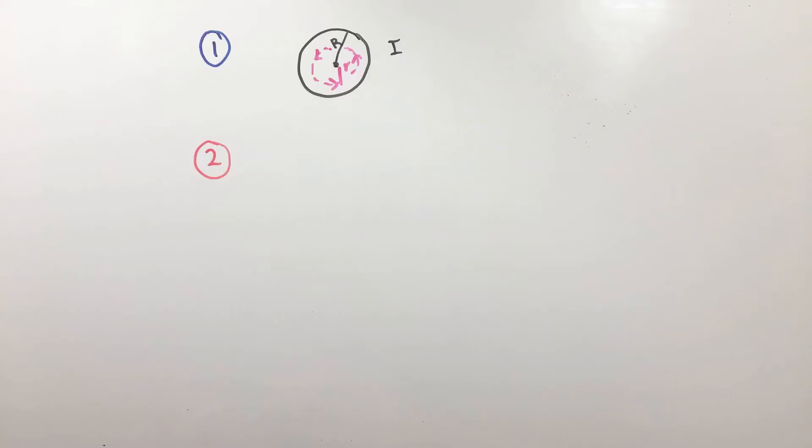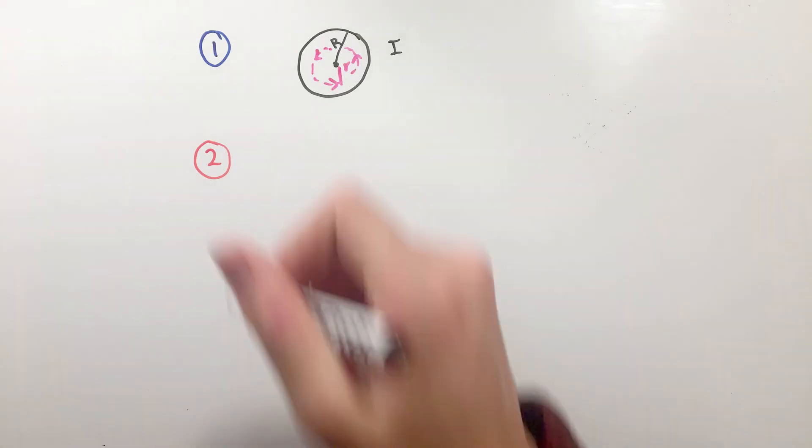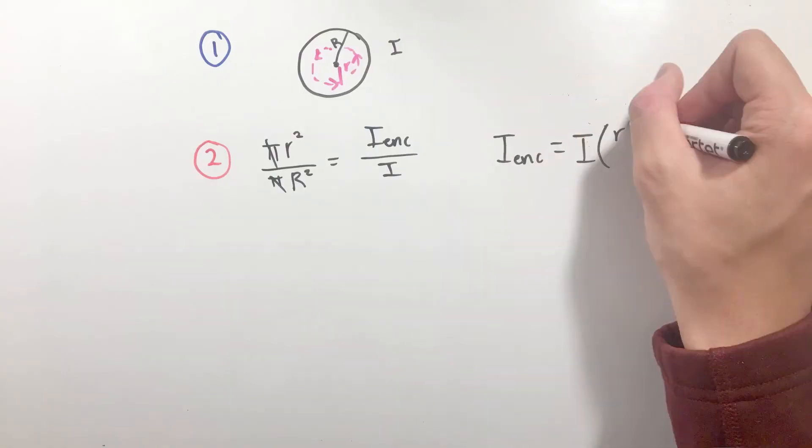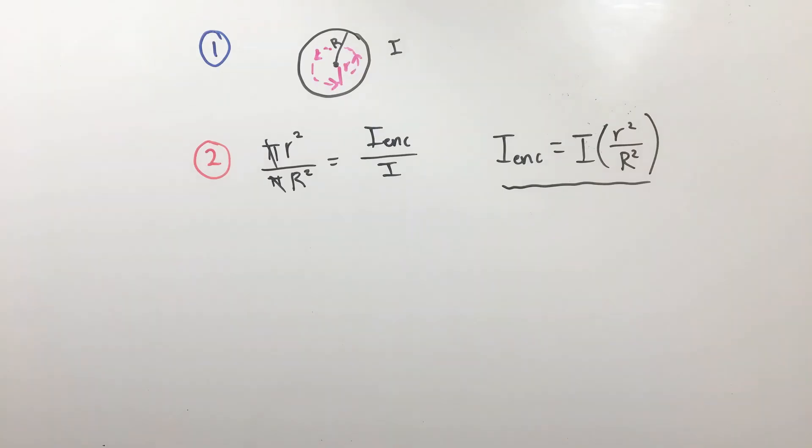Only a portion of the given total current I is penetrating our selected Amperian loop. To find the enclosed current, we can make use of proportions. Equating the proportions of the areas of the loop and cross-sectional area of the wire to the proportions of the currents, the enclosed current is not too hard to find, with its sign still being positive through the right-hand rule.